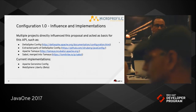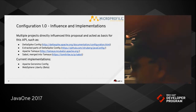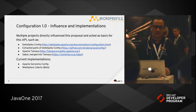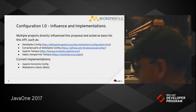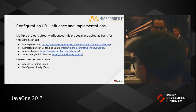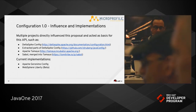Configuration 1.0 was not developed in isolation. The community looked at different existing solutions and, based on best practices and lessons learned, came up with Configuration 1.0. Some of the projects that served as inspiration or influence for Config 1.0 are listed here, like DeltaSpike, Apache Tamaya, and others. The community also considered current implementations like Apache Geronimo Config and WebSphere Liberty as input to the design of this specification.